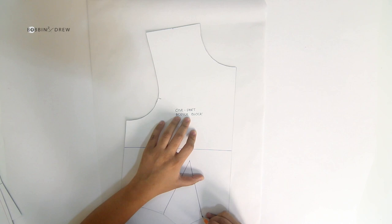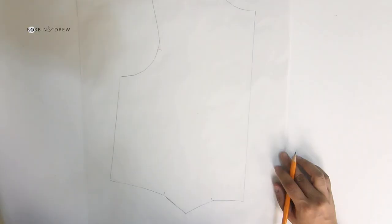Place the bodice block on top of the pattern paper and trace around, making sure to transfer all the markings.